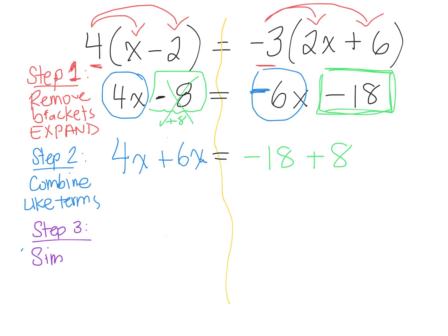Now we need to simplify. So we're either going to add or subtract, whatever the operation is. I'm putting them together now. I'm simplifying them. So what's 4x plus 6x? 10x. And what's negative 18 plus 8? Negative 10. Good. So we've simplified now.